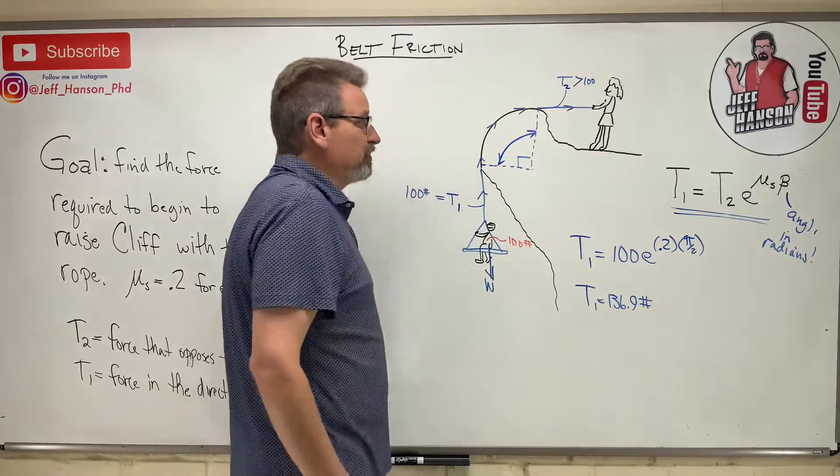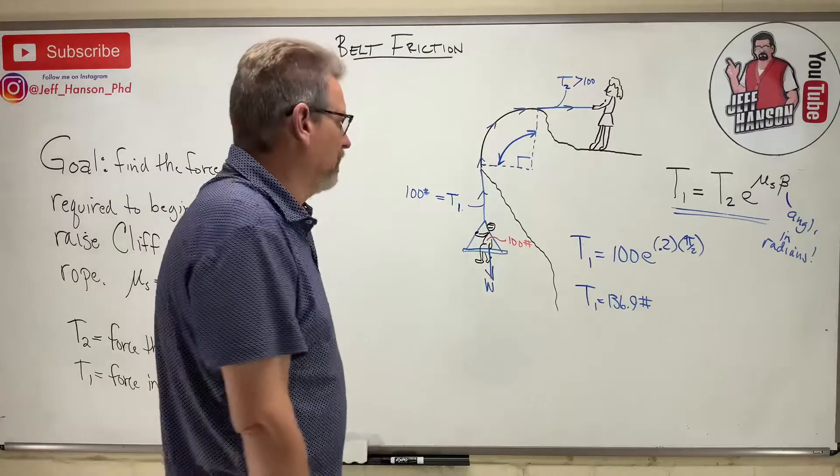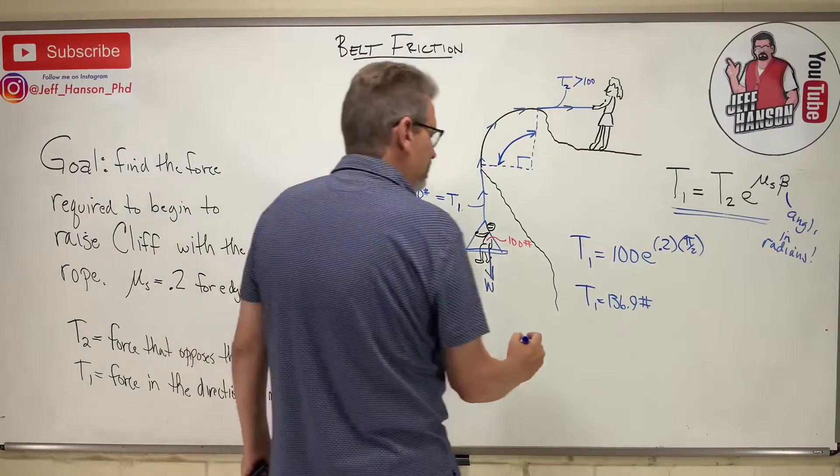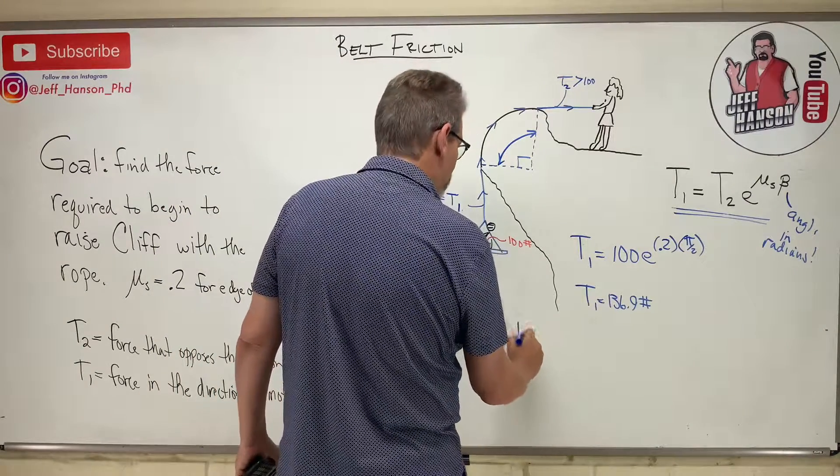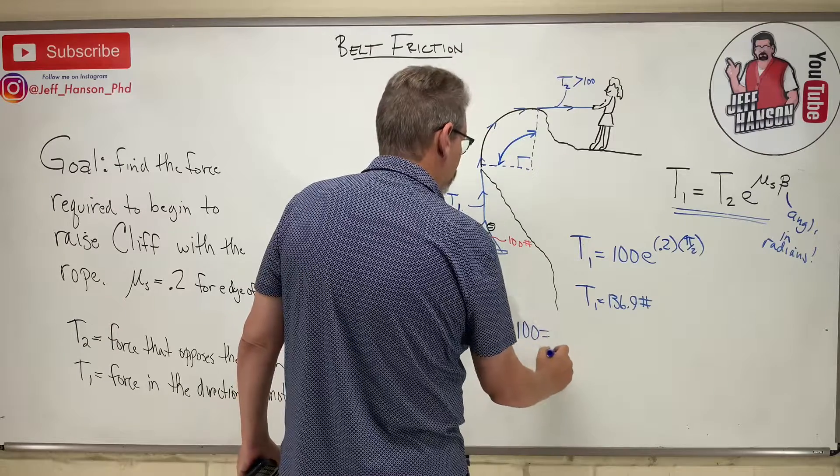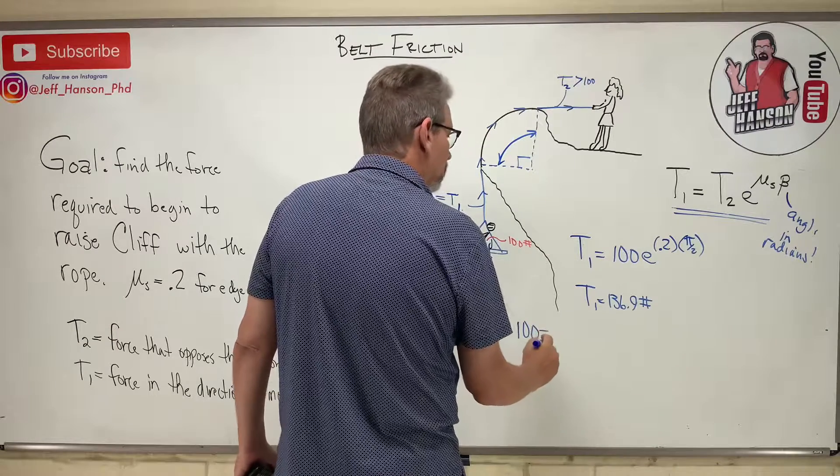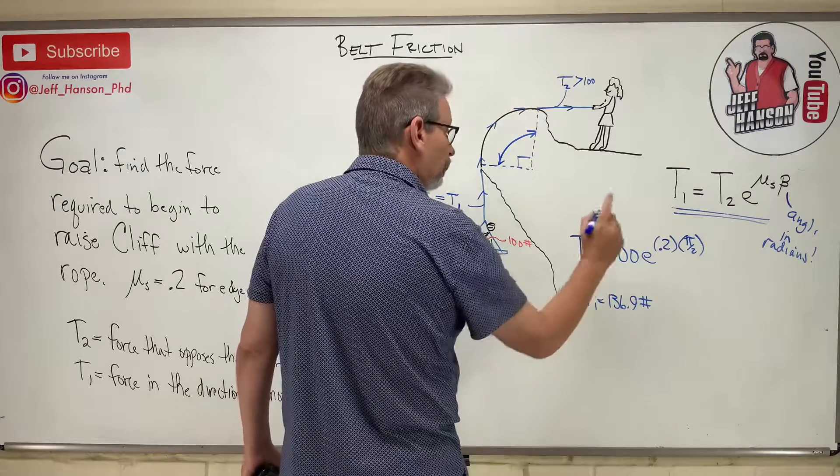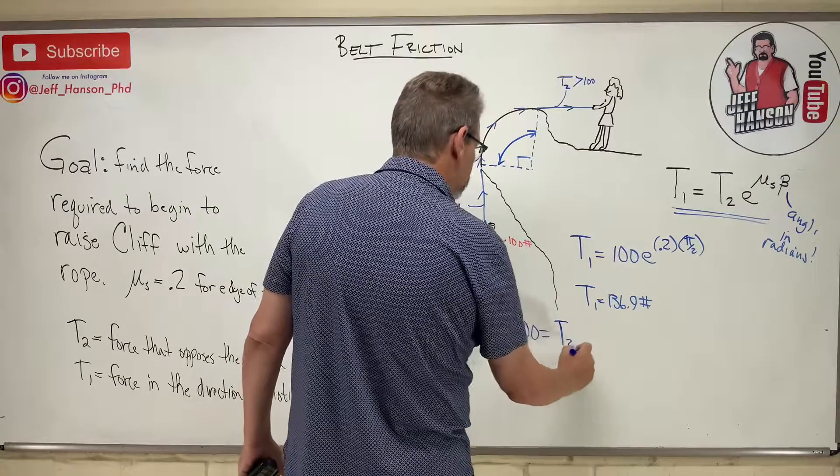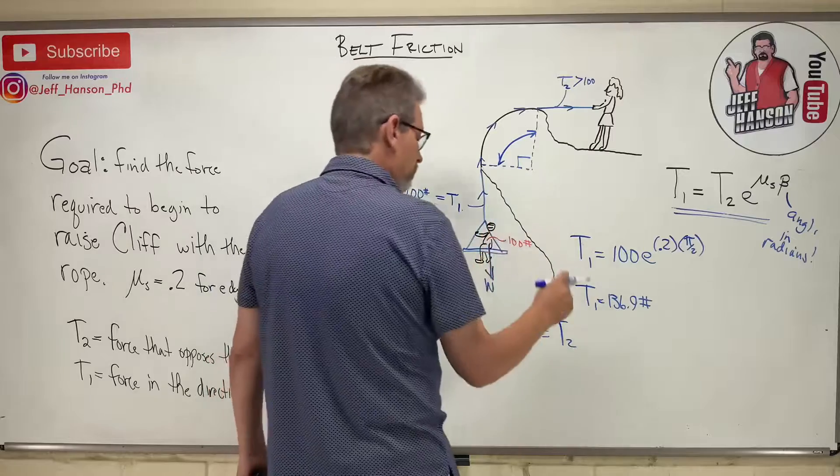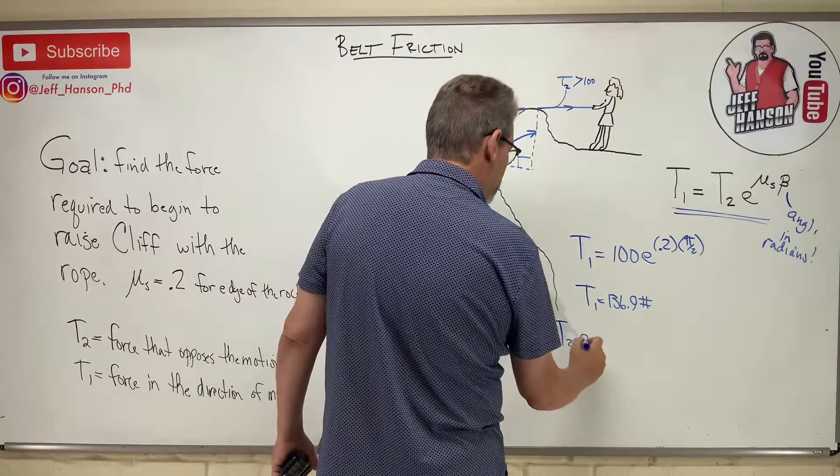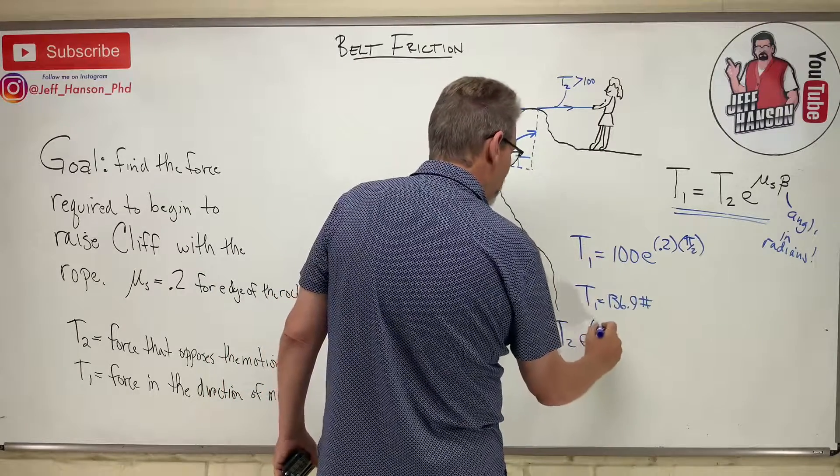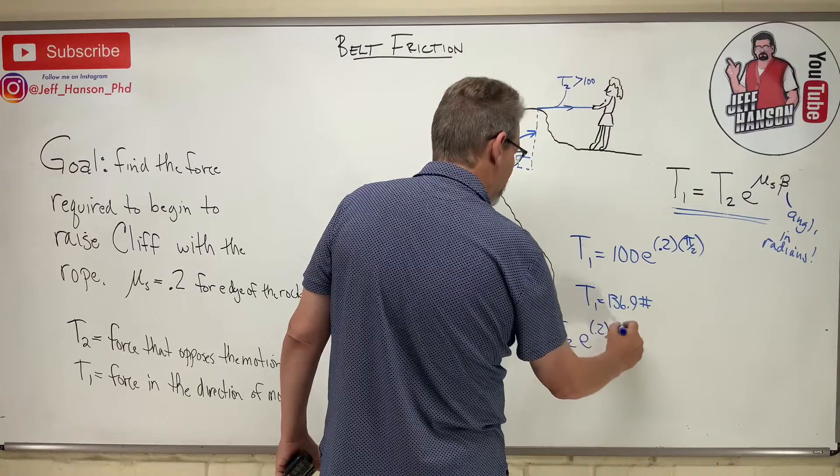Just to hold him in equilibrium it's going to be this. Let's see, 100 is equal to T2, well yeah she's T2, times e to the same thing, right, 0.2 times pi over 2.